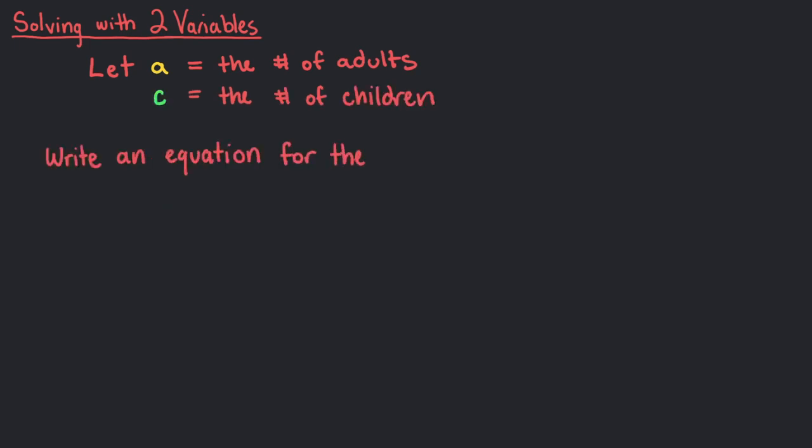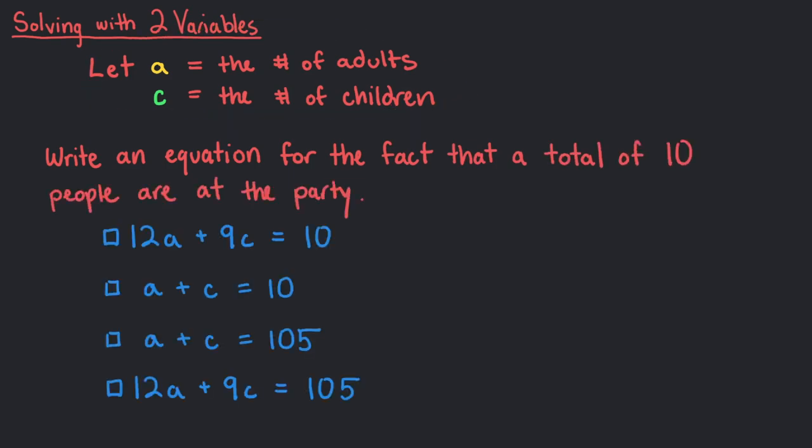Write an equation for the fact that a total of 10 people are at the party using these variables. That's right! We know that there are a adults at this party and c children at this party. In total, there are 10 people so a plus c must equal 10.